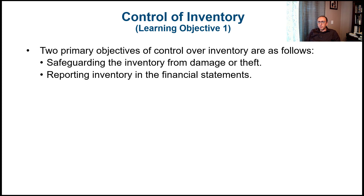The first thing we're going to talk about is the control of inventory, and there are two primary objectives of control over inventory. The first one is to protect the inventory from damage or theft — what we call safeguarding inventory. We keep inventory in warehouses that are locked with secure access. The other reason is to be able to report inventory on the financial statements at a correct value.